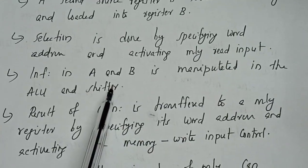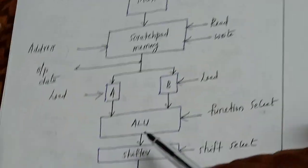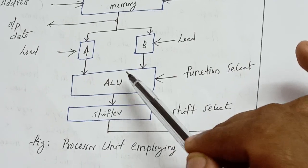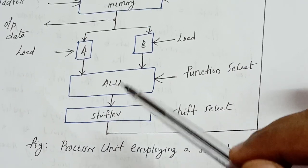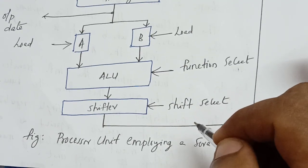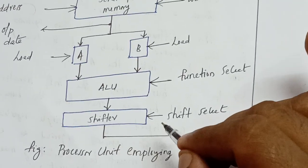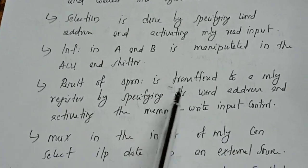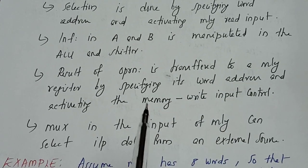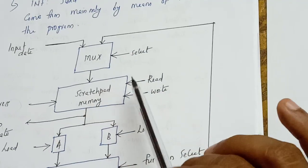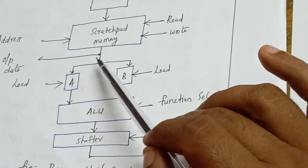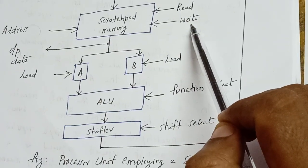The information in A and B is manipulated in the ALU and shifter. The ALU performs all operations based on the function select, and the shifter performs a shift if necessary; otherwise it passes data to the output bus. The result of the operation is transferred to a memory register by specifying its word address and activating the memory write input. The result goes through a multiplexer to the scratchpad memory, and the write signal must be enabled.